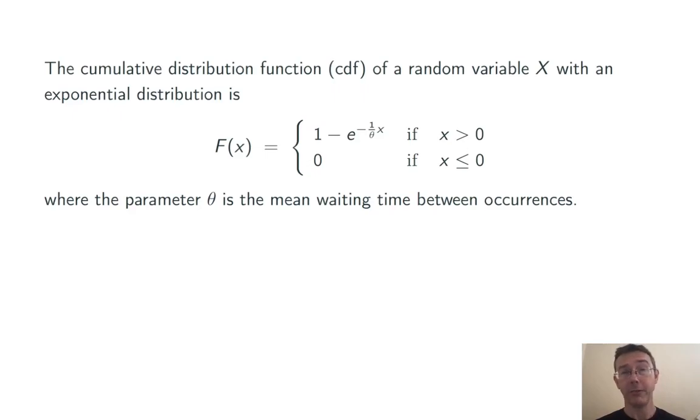Here's the CDF of a random variable like this. It's 0 when x is less than or equal to 0. You can't have negative waiting times. And it's 1 minus e to the negative 1 over theta x when x is greater than 0. So that CDF for x greater than 0 is going to be increasing, concave down, and asymptotic to y equals 1.